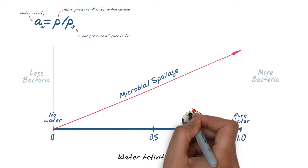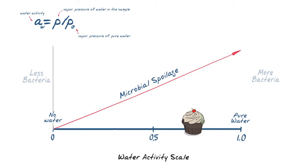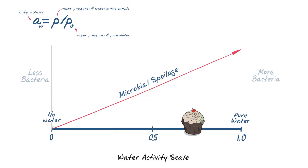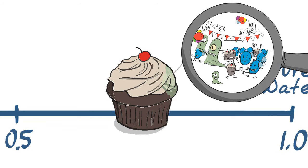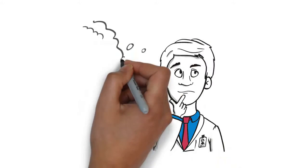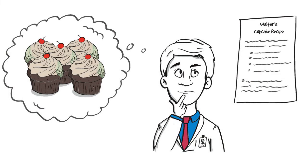In relation to cupcakes, a water activity measurement of 0.5 or lower would mean the likelihood of microbial growth is very low. In Walter's cupcakes, which measured at 0.78AW, it appears too many water molecules are unbound, facilitating mold growth.